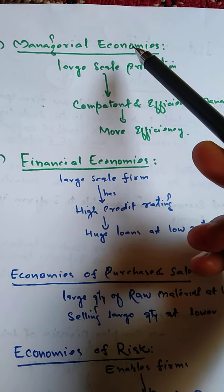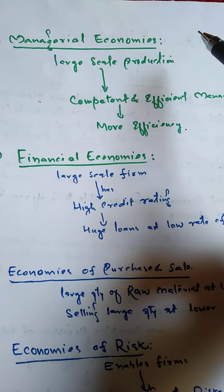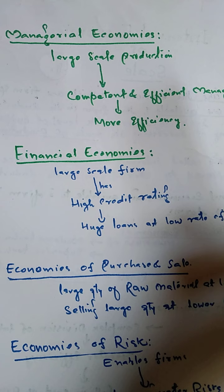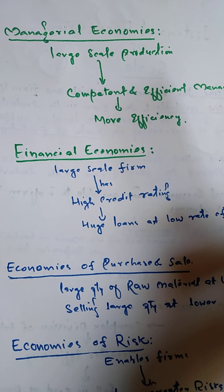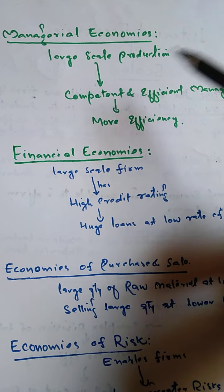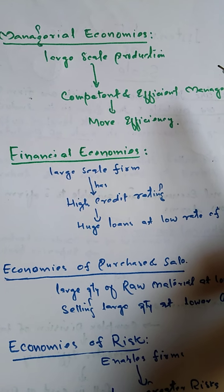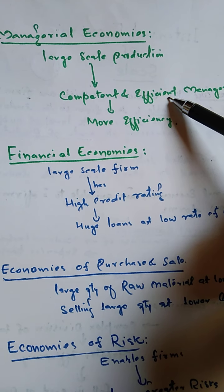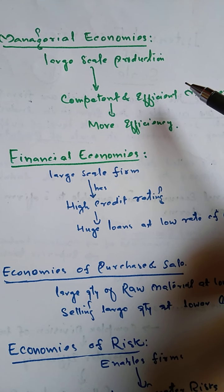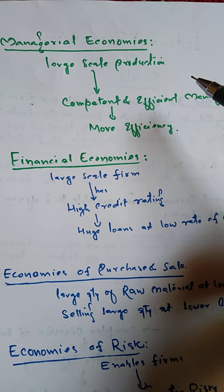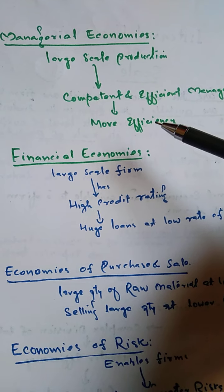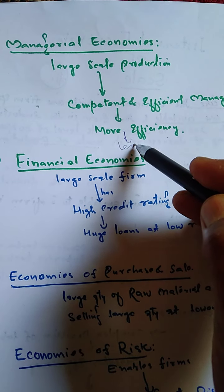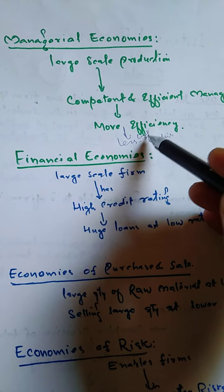Another economy available to a firm is in the form of managerial economies. Jab ek firm large scale par produce karti hai aur apni scale badhati hai, aisee firm effort kar sakti hai to engage competent and efficient managers and managerial staff. Jab managerial staff competent aur efficient ho, unki planning aur decisions sahi hote hain. Is se efficiency badhti hai, aur jahan efficiency ziyada ho production mein, wahan cost of production kam hota hai.